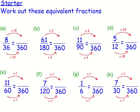Okay, how did you get on? Let's mark it now. It says work out these equivalent fractions. With equivalent fractions, you are finding fractions that look a little bit different but have exactly the same value. We're trying to find a fraction with the same value as 8/36 but with a denominator of 360. We multiplied 36 by 10 to get 360, so whatever we do to the bottom we must do to the top — we get 80 on top.